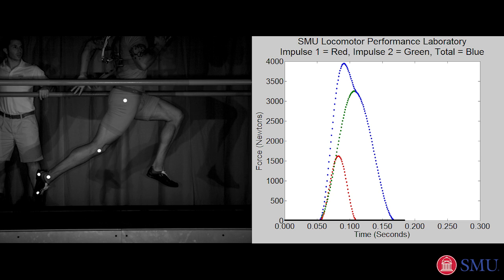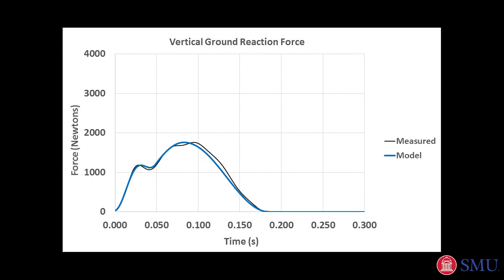Our model accurately predicted forces across running speeds from 3 to 11 meters per second for 42 men and women with different foot strike mechanics.